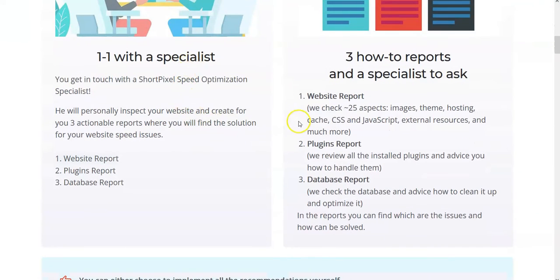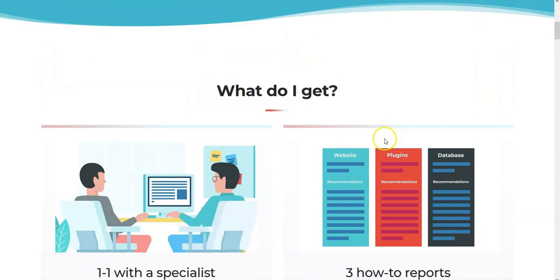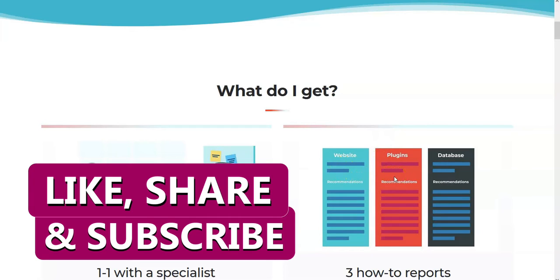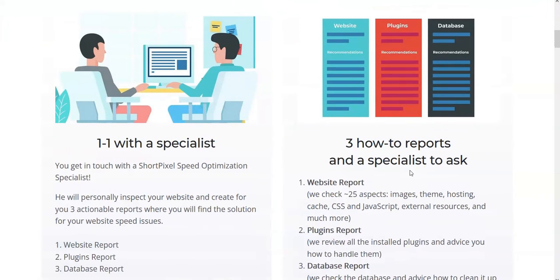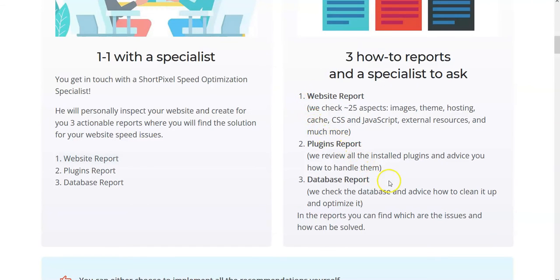With WSO Optimization, you get three reports: a website report checking 25 aspects, a plugins report, and a database report. The reports cover everything. You know how it goes — you go back and forth: the plugin company says it's not the plugin, it's your theme; the theme people say it's the hosting. Between hosting, plugin conflicts, and colliding plugins, you don't know what to believe. WSO sets you straight on exactly what is going on with your website.